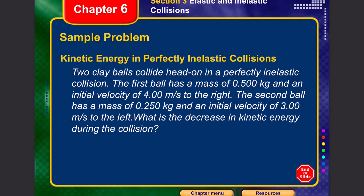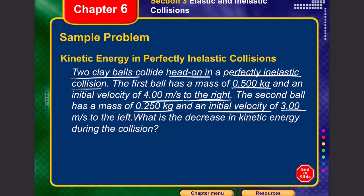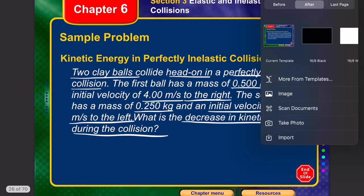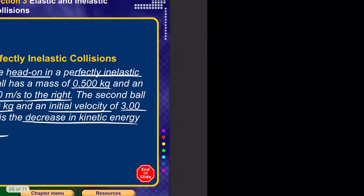Let's solve a perfectly inelastic collision example. Two clay balls collide head-on. The first ball has a mass of 0.500 kg and initial velocity of 4 m/s to the right. The second has a mass of 0.250 kg and initial velocity of 3 m/s to the left. We need to find the decrease in kinetic energy, so first we must find the final velocity.